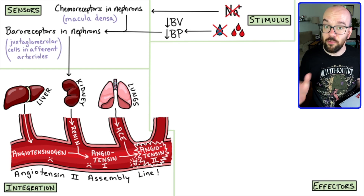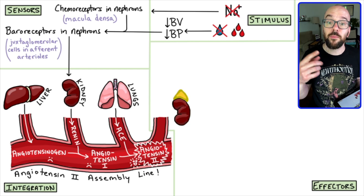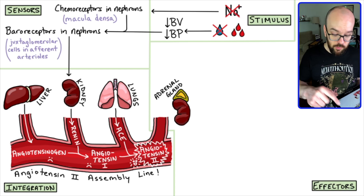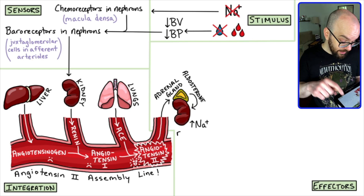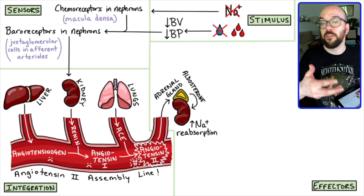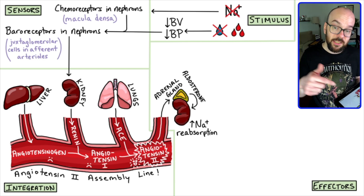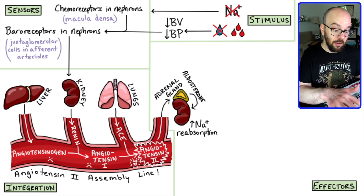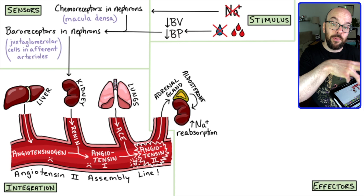So what does angiotensin II do exactly? First, we need to add the adrenal gland to our diagram — it sits on top of the kidney. Angiotensin II travels to the adrenal gland and stimulates it to produce a hormone called aldosterone. That aldosterone travels from the adrenal glands to the kidneys and causes an increase in sodium reabsorption in the nephrons. The nephrons filter fluid and sodium out of the blood, and aldosterone causes more and more of that sodium to get reabsorbed back into the bloodstream, therefore conserving the sodium in our blood.